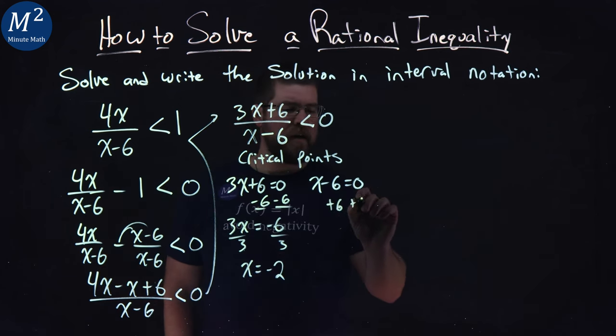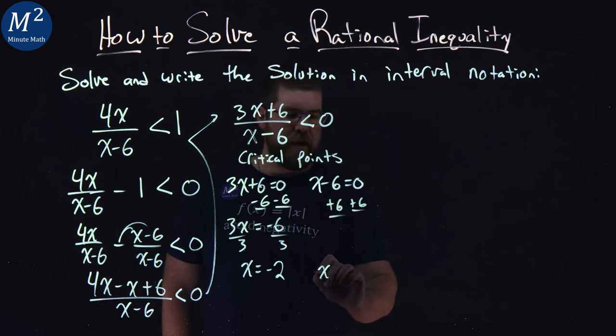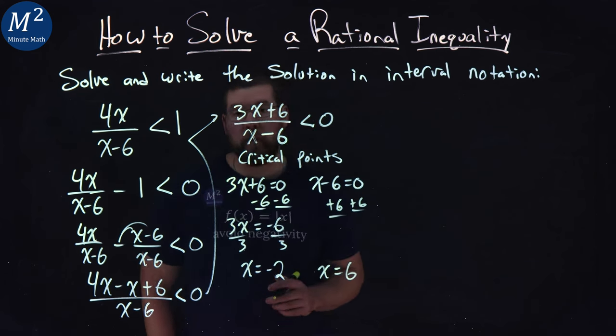The second one, I add 6 to both sides, and x equals positive 6. That's our second critical point.